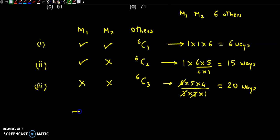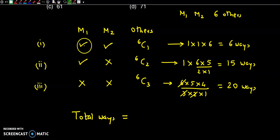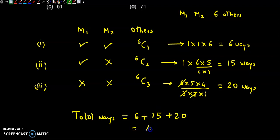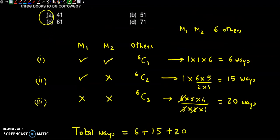The total ways of selection, using the fundamental principle of addition (since the three cases are mutually exclusive), is 6 + 15 + 20 = 41. The correct answer is option A.